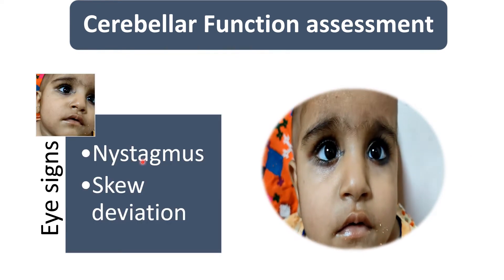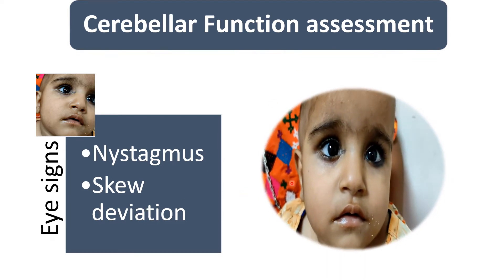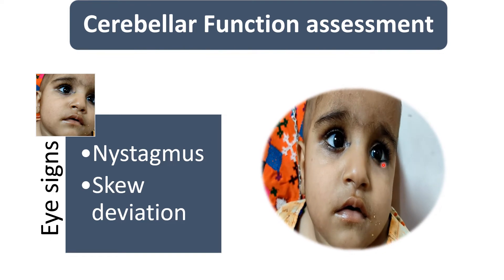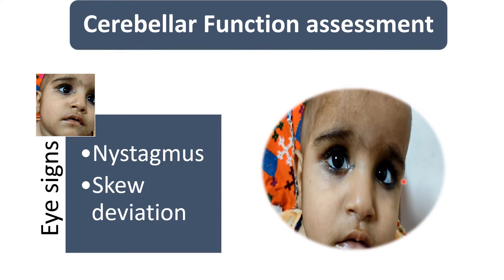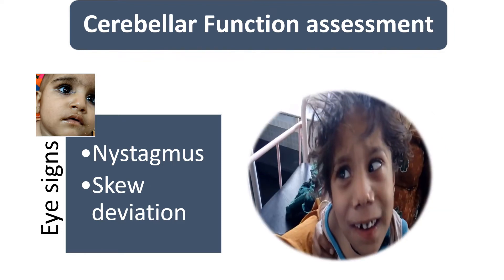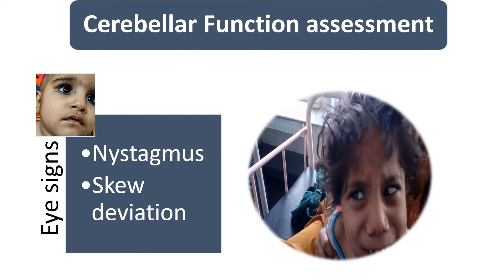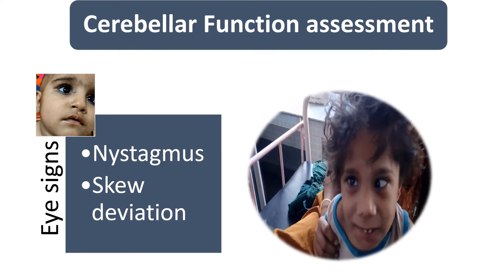In eye signs, the child may have nystagmus or skew deviation. In this video you can see the child is having nystagmoid eye movements — these are gaze-paretic nystagmus due to vestibulocerebellar pathway involvement. The child is not able to sustain eccentric gaze and requires repeated saccadic movements to gaze laterally. Sometimes the child may have skew deviation, ocular dysmetria, flutter movements, opsoclonus, or rebound nystagmus — a unique feature of cerebellar disease where the fast component is in the direction of lateral gaze. In this video, you can see nystagmus with skew deviation, characteristic of cerebellar disease.